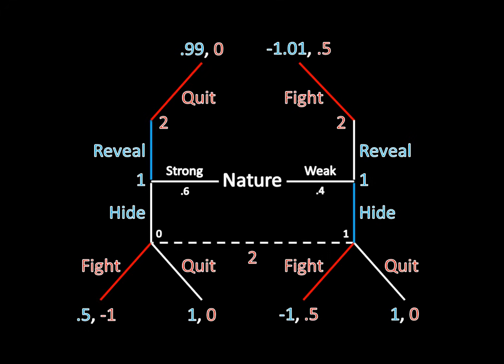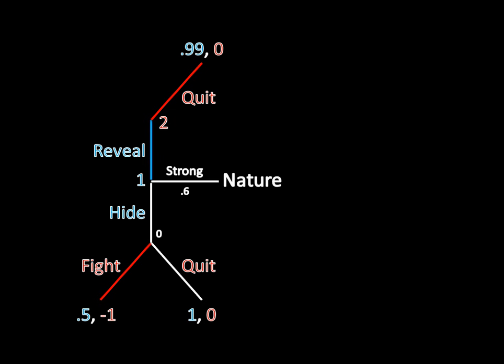Let's try doing this now, using the game tree that we have there. We have to check for both the strong and the weak type having profitable deviations, and we have to do those one by one. So let's go ahead and just focus on the strong type for a moment. According to the proposed equilibrium strategies, Player 1 is supposed to reveal, and then after that Player 2 will quit. In that case, Player 1 gets a payoff of 0.99 as the strong type.